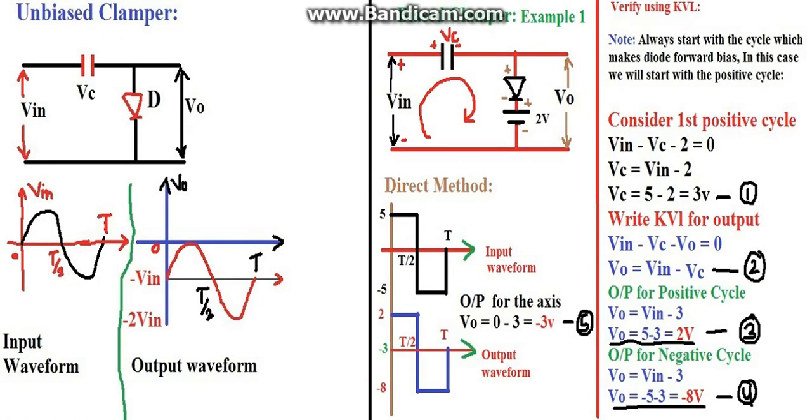Now let's look at the unbiased clamper. In this unbiased clamper, we have an input waveform. We have Vin, then we have Vc voltage across the capacitor, and then we have Vo output voltage. The input waveform varies from plus V to minus V, and this is over a period of zero to T.